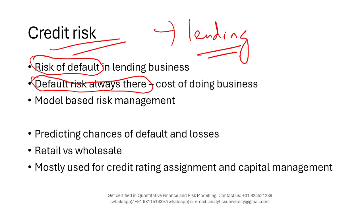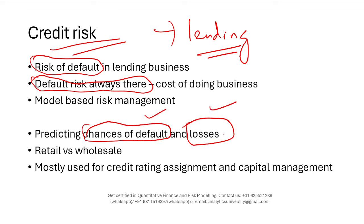Default risk is always present in banking — it's the cost of doing business. It's impossible to have no defaults, but the idea behind building credit risk models is to know how much risk you are taking so it doesn't exceed what you can handle. You build models to predict the chances of default for a given customer, and if that customer defaults, how much loss you will make. If you can predict these two things with great accuracy, you'll know well in advance how much risk you run in your portfolio and can put appropriate risk management mitigations in place — such as maintaining enough capital.